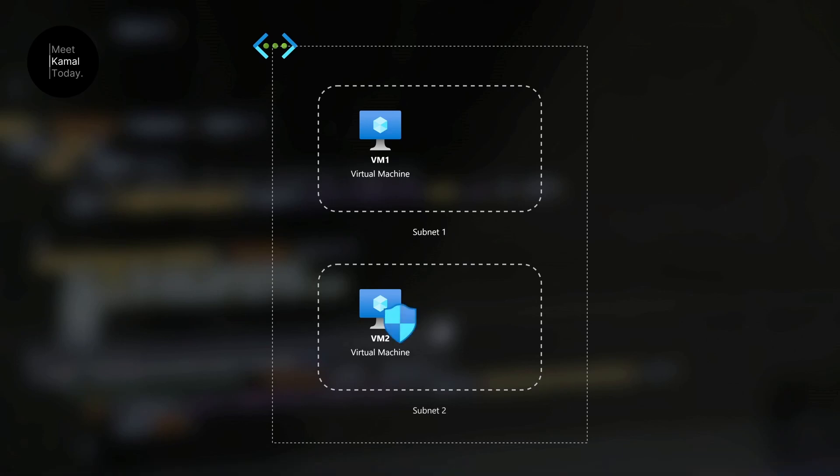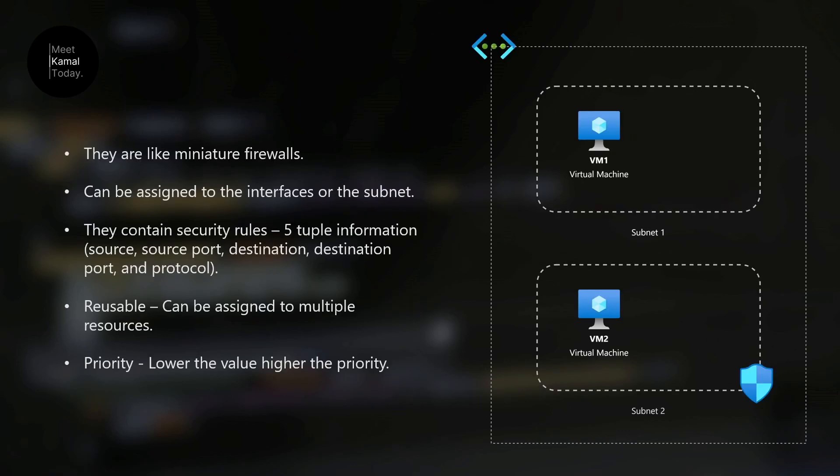As you can see, you can place these network security groups either at the virtual machine level or at the subnet level. Based on your need, you can decide which to use. They act as miniature firewalls — basically, you can define security rules.